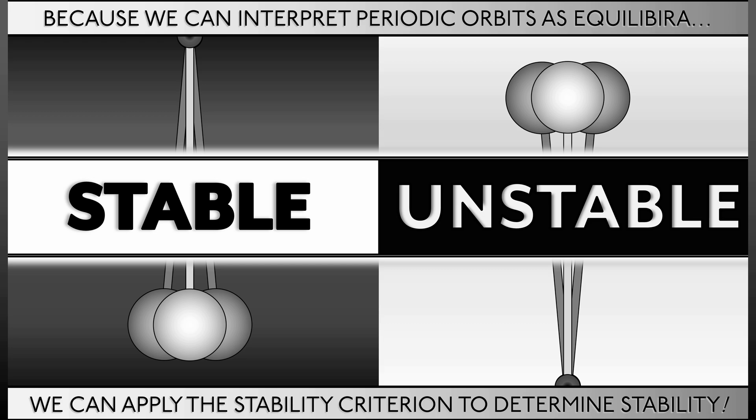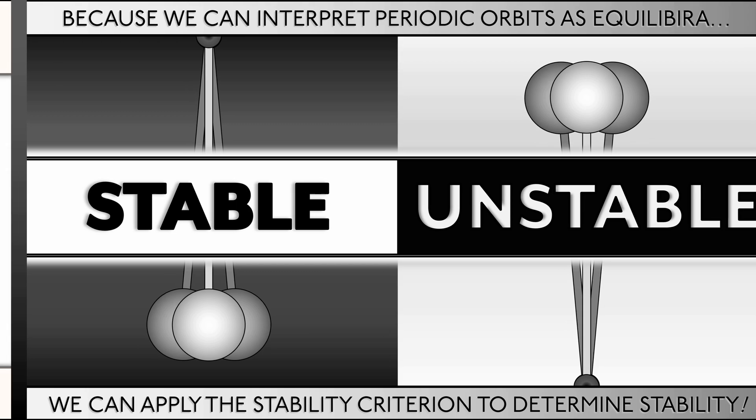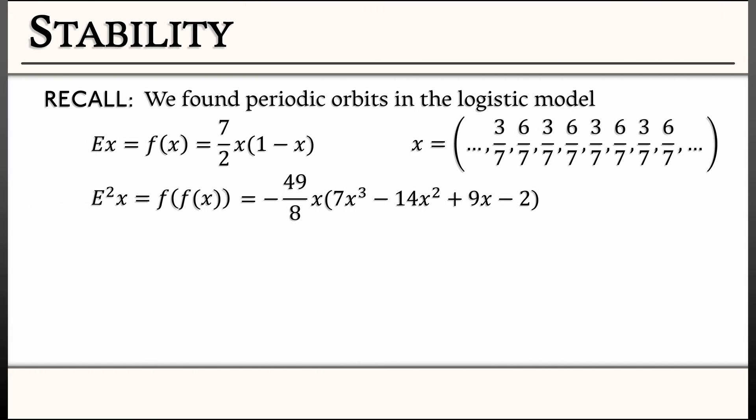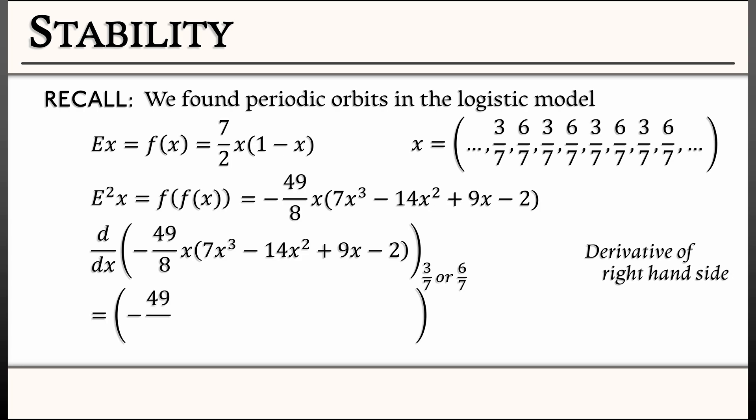If we go back, if we look at this period 2 orbit, consider f composed with f, and then we take the derivative of that right-hand side, we take the derivative of that fourth order polynomial, evaluate that either at 3 sevenths or at 6 sevenths, then what do we get? Well, you get negative 49 eighths times quantity 28 x cubed minus 42 x squared plus 18 x minus 2.